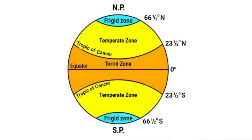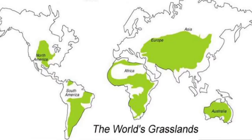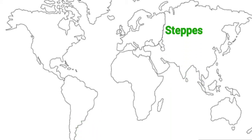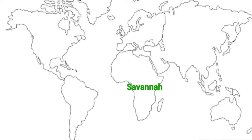The temperate zone lies between the latitudes 23.5 degrees north to 66.5 degrees north in the northern hemisphere, and 23.5 degrees south to 66.5 degrees south in the southern hemisphere. These grasslands are given different names at different places — like prairies of North America, pampas of South America, steppes of Russia, veld of South Africa, downs of Australia, and savannas of central Africa.